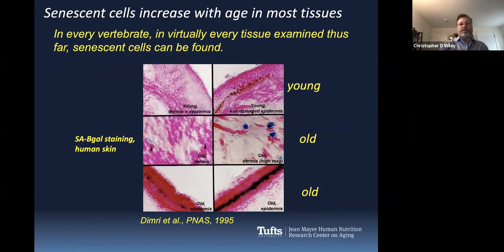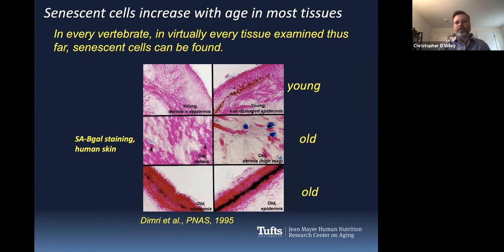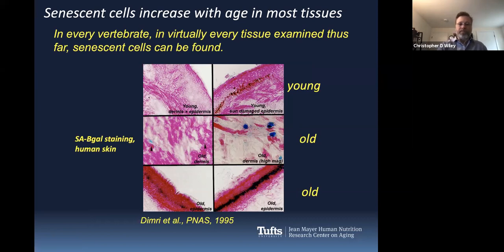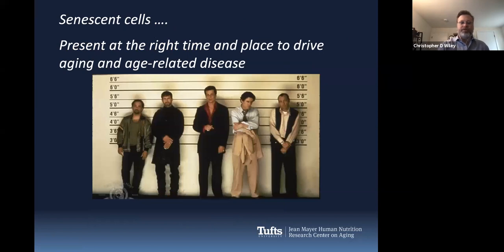We know that senescent cells show up in virtually every vertebrate — fish, frogs, mice, monkeys, and humans all get senescent cells as we age. If you get old enough, they appear in virtually every tissue we've looked at. They're really a nice potential driver of aging because they show up everywhere. You can see them here, for example, as blue cells in the skin of an older individual. If senescent cells are showing up at the right time and right place to drive aging and age-related diseases, that makes them a pretty good suspect for driving a good part of aging.